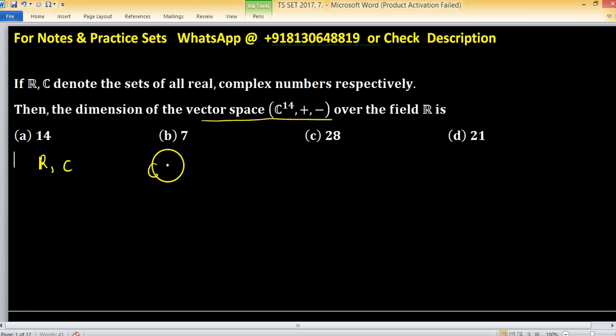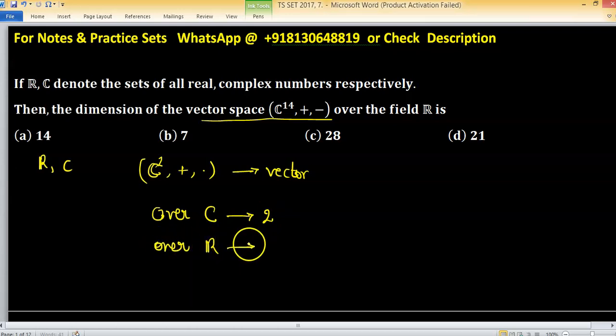As you have studied, C^2 with respect to addition and scalar multiplication is a vector space. The dimension over C is 2, but the dimension over R is 4.